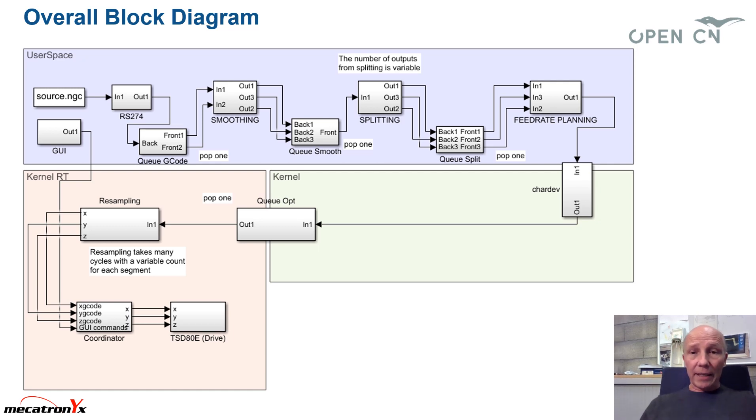Then everything is turned to the kernel space. And in the kernel space, we have basically the resampling. So we are combining the geometric representation, R as a function of U, with the feed rate planning, which is finally U as a function of T. And then everything is passed via either CAD field bus to the different drives of the machine.